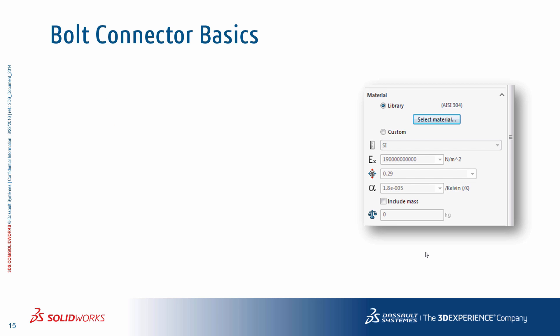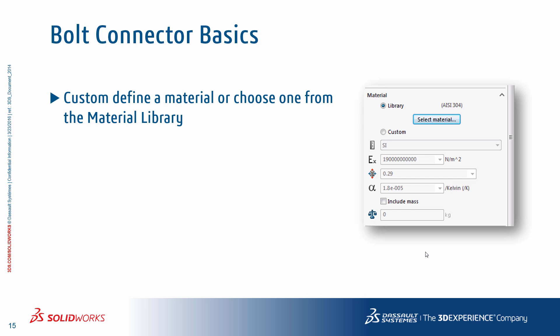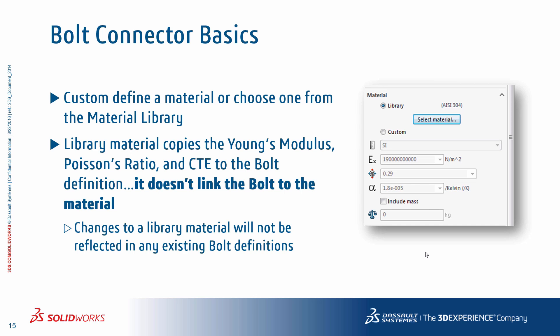In setting up a bolt you do need to define a material. The default material selected is AISI 304; however, you can define a custom material by specifying a Young's modulus, Poisson's ratio, and coefficient of thermal expansion, or select a material directly from the simulation library. Keep in mind that the library material copies the required properties but does not link the bolt back to the material library, meaning any changes to the material properties in the library will not reflect in the existing bolt definition. In that case you must reselect the material of the bolt one more time.